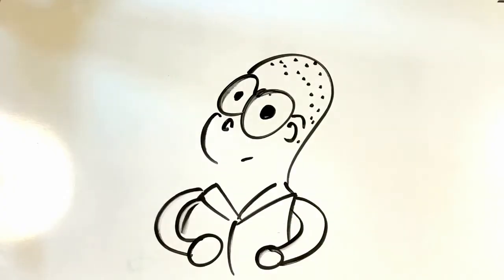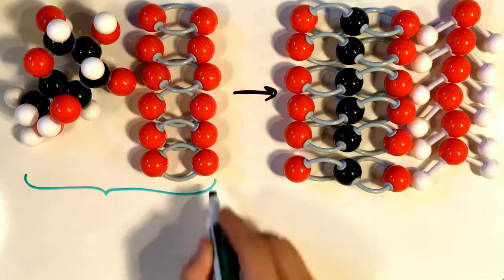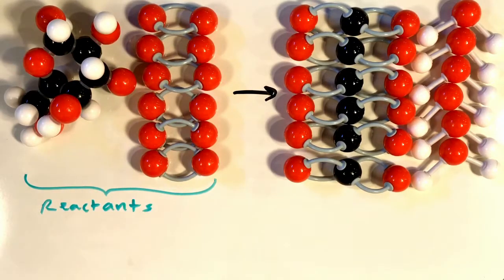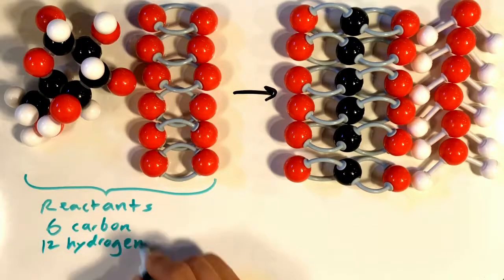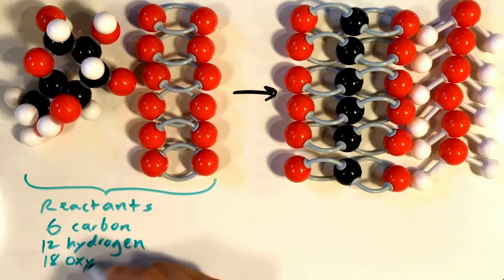Let's double check our work to make sure that we balance this reaction properly. On the reactants side, we currently have 6 carbons, 12 hydrogens, and 18 oxygens.